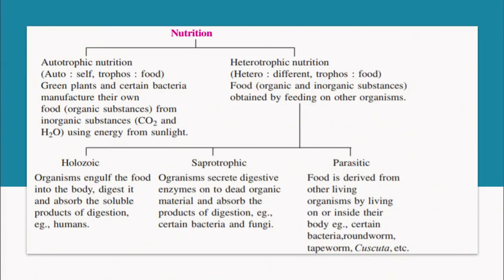Heterotrophic nutrition can again be of three types: holozoic, saprophytic and parasitic. Holozoic organisms engulf the food into the body, digest it and absorb the soluble products of digestion — as in humans, we have a holozoic mode of nutrition. Saprophytes are organisms which depend on dead and decaying matter; we can say they clean the earth. They secrete digestive enzymes onto dead organic material and absorb the products of digestion. Examples of saprophytes are fungi and bacteria.